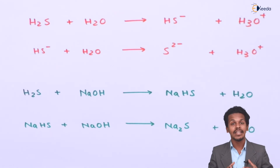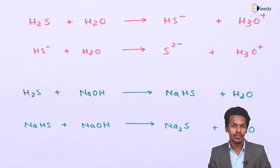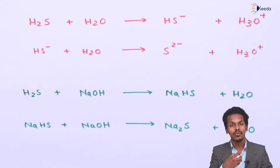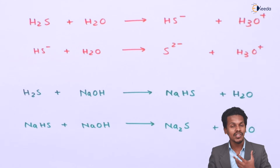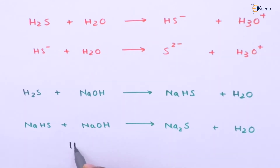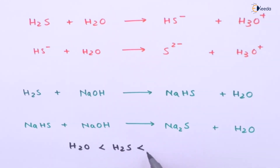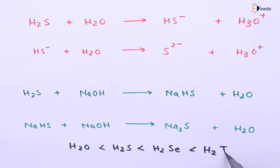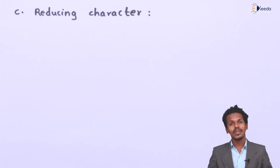The heavier hydrides will have a bigger atomic size, and therefore the polar nature will be more pronounced, making it easier to remove the hydrogen. That is the reason H2O is less acidic compared to H2S. The order of acidity is: H2O < H2S < H2Se < H2Te — so the hydride of tellurium is the most acidic. This was the acidic character.